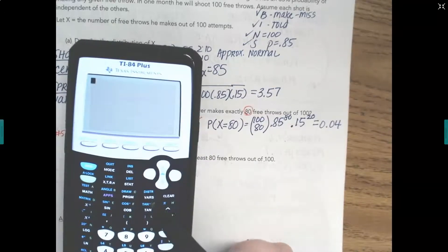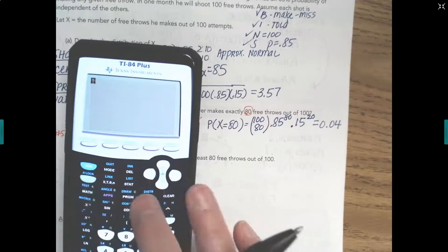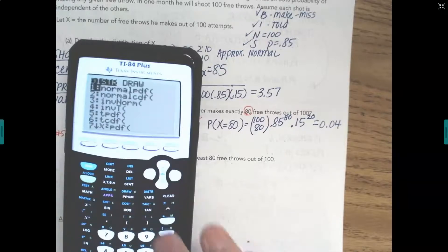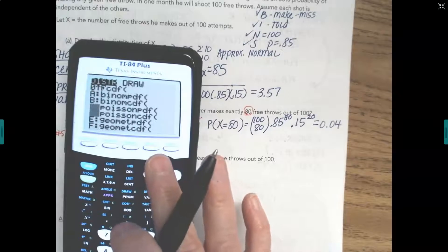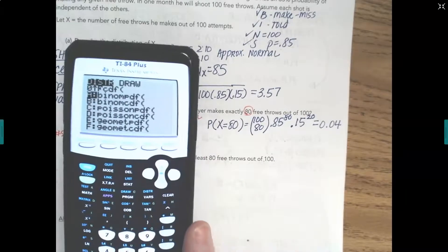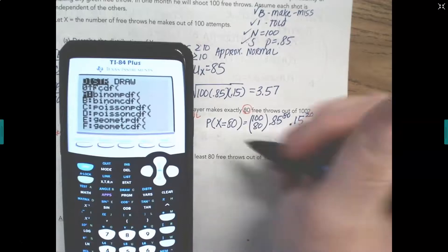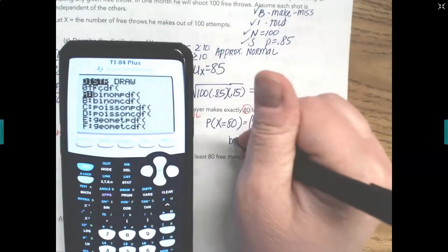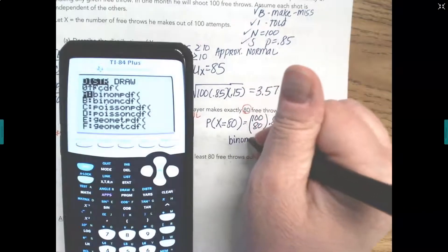We're going to go 2nd VARS, which is the distribution, which is just down next to the down arrow. So 2nd VARS, and we have a whole bunch of different things on here. Arrow up, and I'm going to go to Binome PDF. So I'm going to write down what I'm using, I'm using Binome PDF.